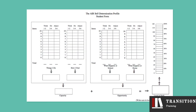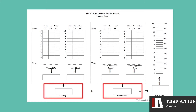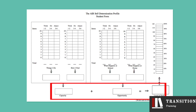Knowledge, ability, and perception are added to reach the capacity score. Opportunity at school is added to the opportunity at home to form the opportunity score. Lastly, capacity is added to opportunity to reach the score for level of self-determination.